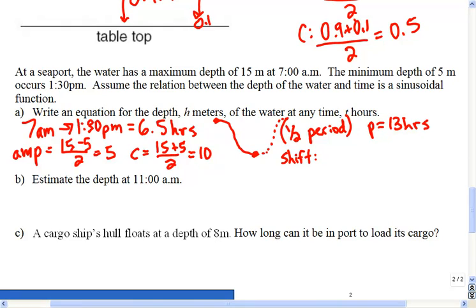Okay, so there's the first three pieces. It takes six and a half hours to get from high tide to low tide. That's half of the period, so we can figure out the total period is 13 hours. The amplitude of the graph is 5 and the centerline is 10.